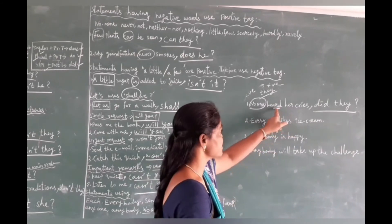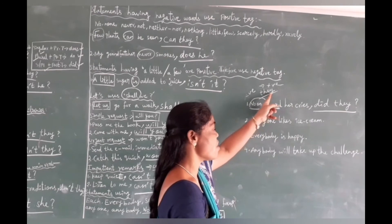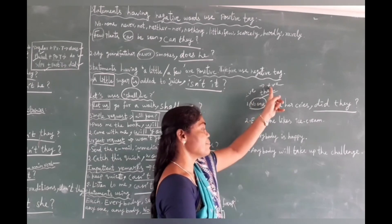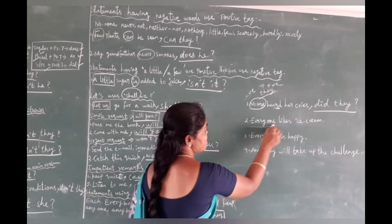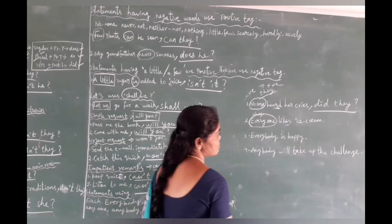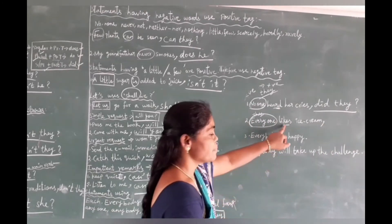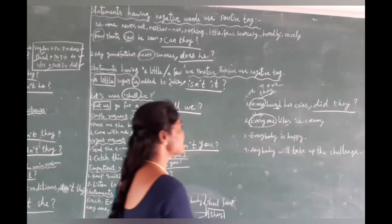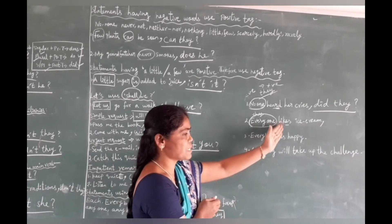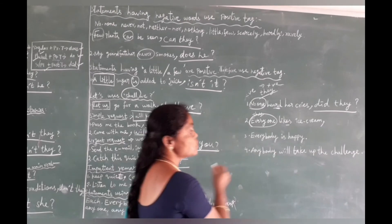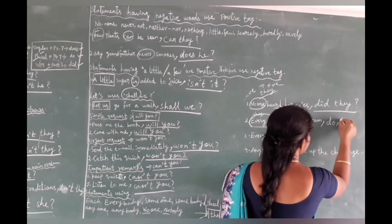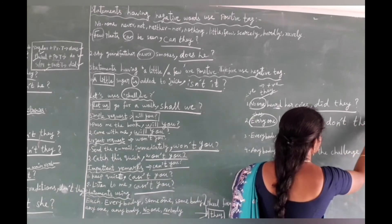Another example: 'Everyone lives here.' Subject 'everyone' takes plural form 'they'. Present tense, subject plural, so we use 'do'. The given statement is positive, so the tag is negative: 'don't they?' Next: 'Everybody is happy.' Here 'everybody' is plural and the auxiliary is 'is'. Given statement is positive. Since they represents plural, the tag uses 'aren't': 'aren't they?'